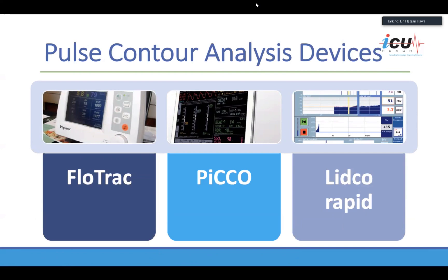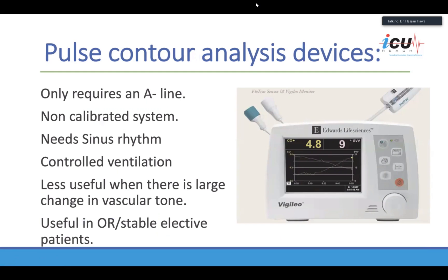Pulse contour analysis devices include FlowTrack or Vigileo by Edwards, PICO or PicoRapid, and LidcoRapid, which gives you analysis of the pulse contour. You need the A-line and then attach this device to it. The problem with these systems is they are not calibrated — that differentiates them from the full version of PICO or Volume View. These devices are ideal for patients in sinus rhythm, passively breathing under controlled mechanical ventilation, and are best for OR or stable elective cases or patients on low doses of pressors in ICU.